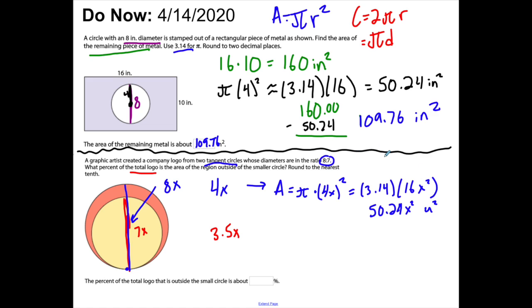Similarly, if I want to get the inner area, I'm gonna do π times 3.5x squared, which equals about 3.14 times 3.5 squared. When I do that on my calculator, I get 12.25x². Now I take 12.25 and multiply that by 3.14, and I get 38.465x² units squared.